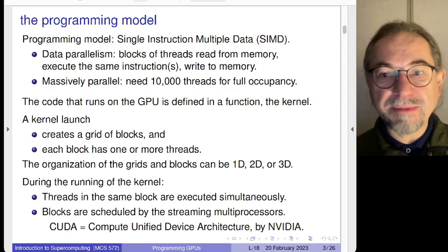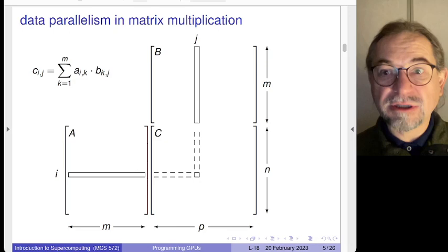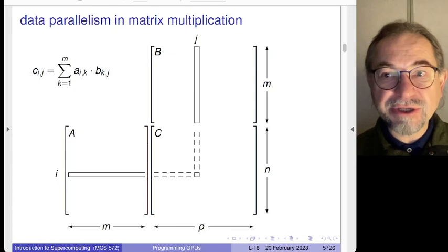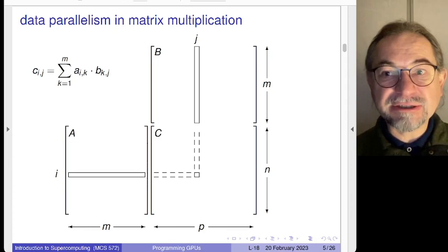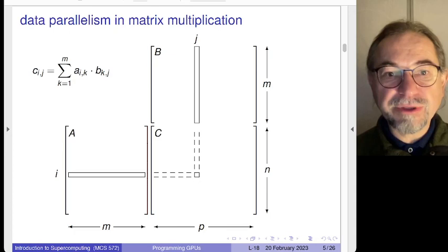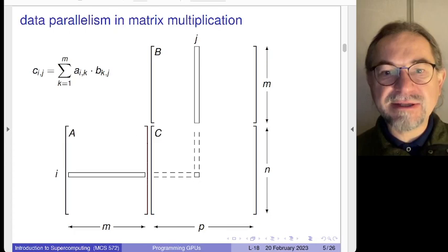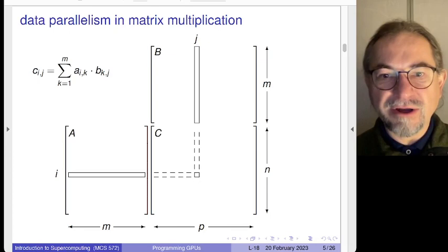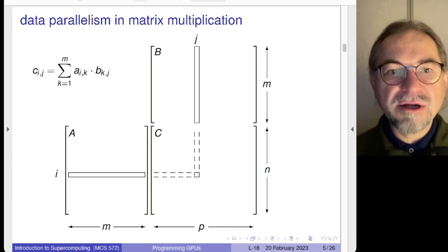Data parallelism seems to impose a lot of regularity on the type of applications that can run. Fortunately, matrix-matrix multiplication is one of the typical applications that is extremely suitable for GPU acceleration. Here is the picture. We are multiplying two matrices, A and B. A is N by M, B is M by P. You can see how this alignment works. The C matrix is then N by P. The formula for the matrix-matrix multiplication is listed on this slide here.